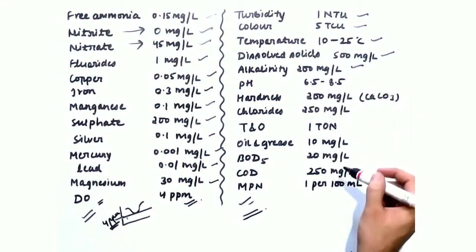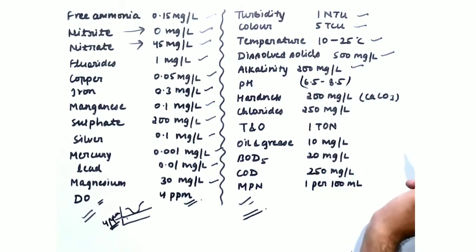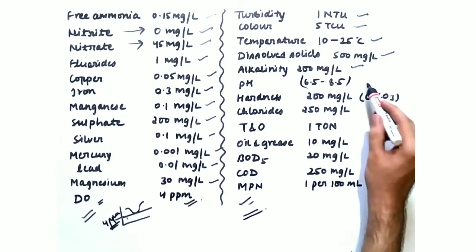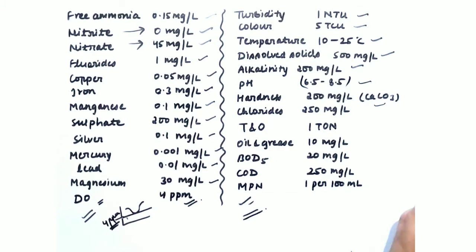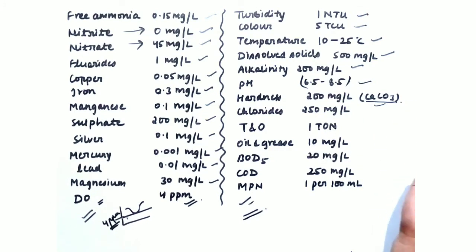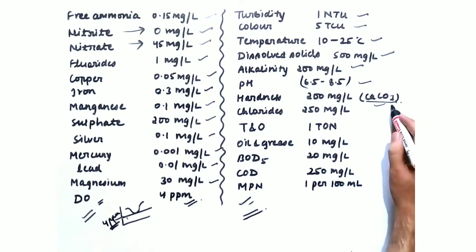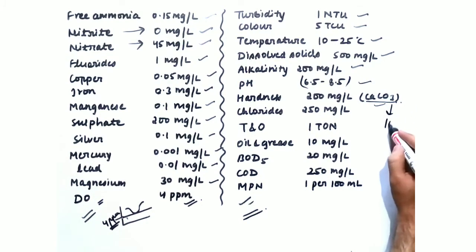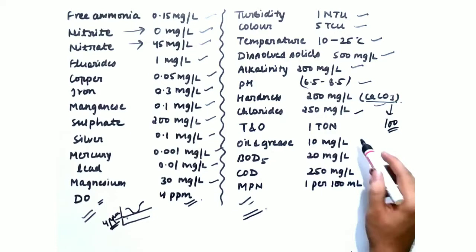Alkalinity is 200 mg per liter. The nominal pH range is 6.5 to 8.5 — neither too acidic nor too basic. Hardness is 200 mg per liter, measured in terms of CaCO3. We always measure hardness and alkalinity in terms of CaCO3 because it has a molecular weight of 100 grams, which makes calculations easier. Chlorides are 250 mg per liter.